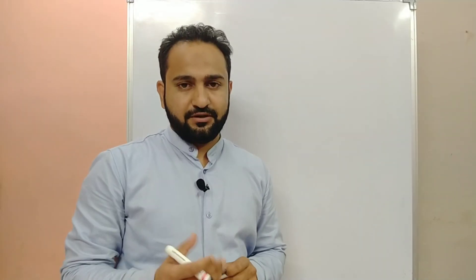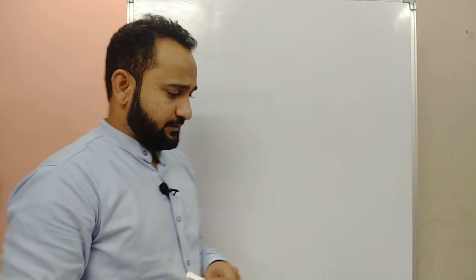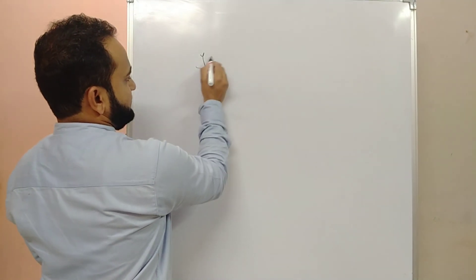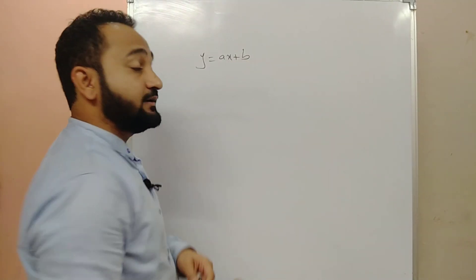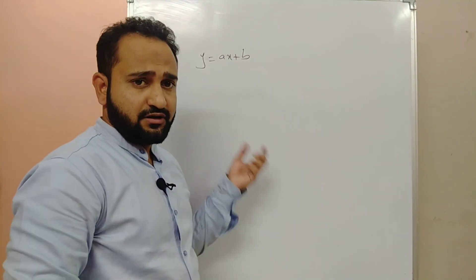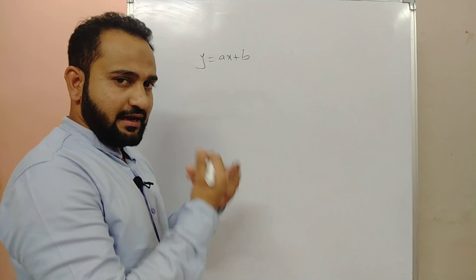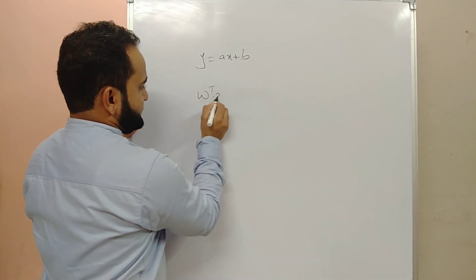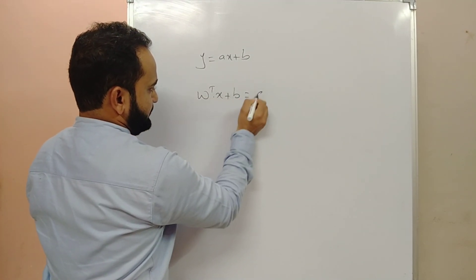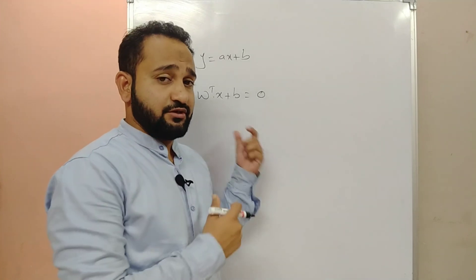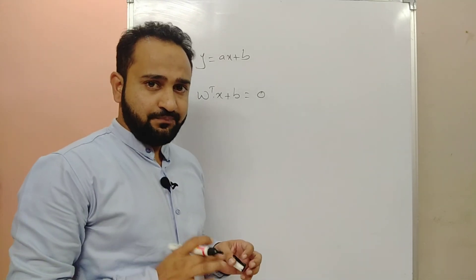The most important thing is finding that hyperplane, which is called the maximum margin hyperplane or optimal hyperplane. So before we start, let's see that in 2D, a plane is a line. The equation of a line is y = ax + b. You can also use y = mx + c. In 3D, this line is represented as W^T·X + B = 0. That is the equation of the hyperplane.